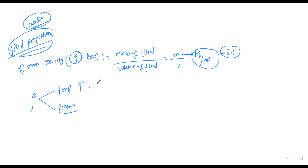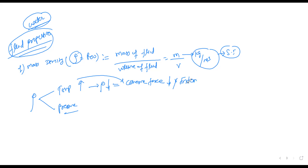With rising temperature, the density decreases. Why does the density decrease? Because with rising temperature, the intermolecular distance increases due to decreasing cohesive force. So if there is a rise in temperature, the cohesive force between the molecules decreases and intermolecular distance increases, which is responsible for decreasing density.